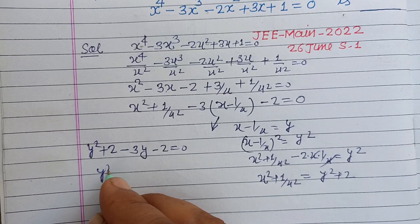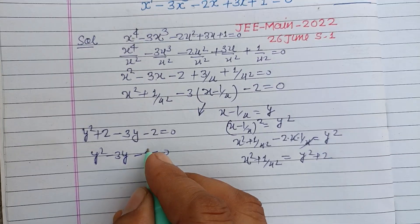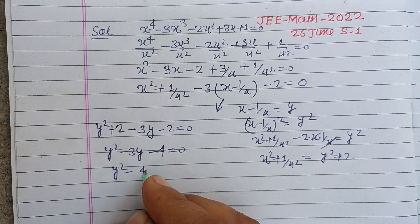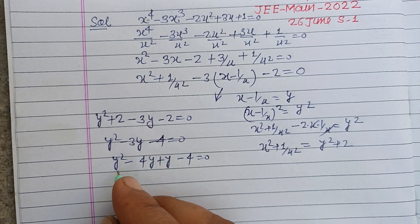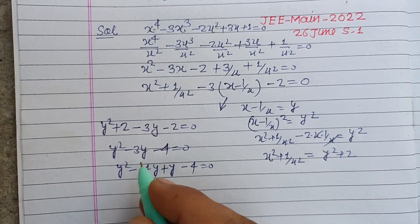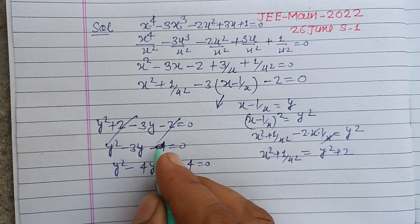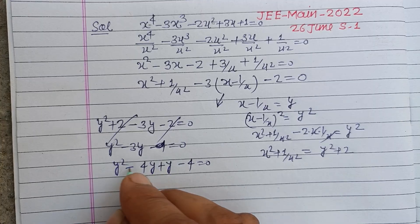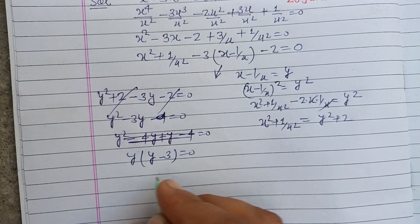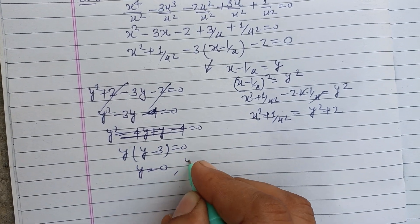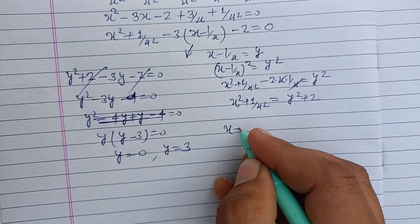This simplifies to y squared minus 3y equal to 0, so y times y minus 3 equal to 0. Therefore y equals 0 or y equals 3.